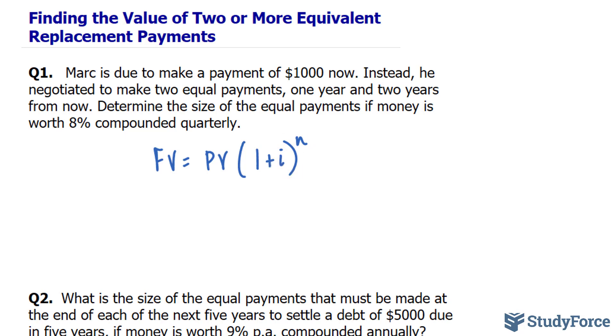This formula can easily be manipulated so that present value is isolated. You do that by dividing both sides by (1+i)^n. So if you want the present value isolated, you end up with PV = FV/(1+i)^n. Sometimes for convenience, the right side can be written as FV(1+i)^-n.